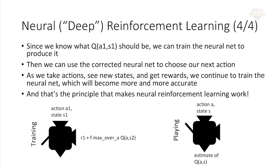Here we are in training mode with our mathematical expression, training up our Q function. When we actually play, we give it a state S that we're in, ask how good a particular action is, it tells us, and we use that to guide our play optimally — ideally. Except in the real world with finite amounts of training, it's never truly optimal.